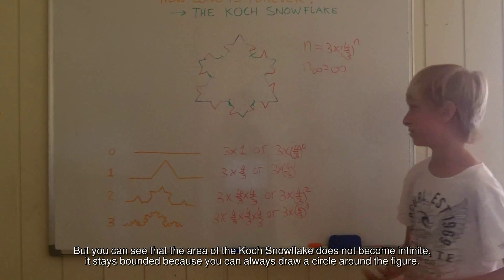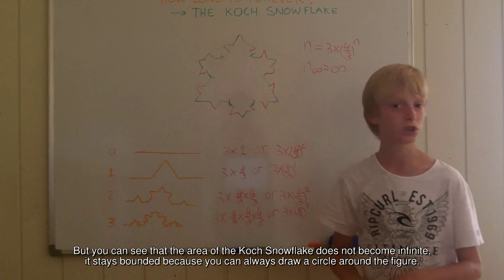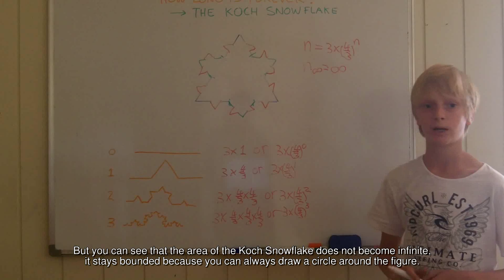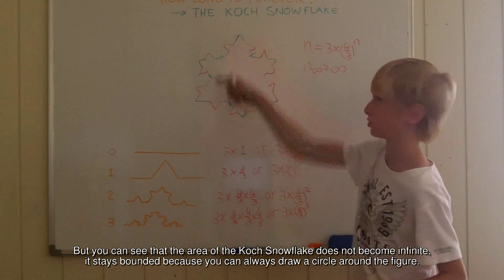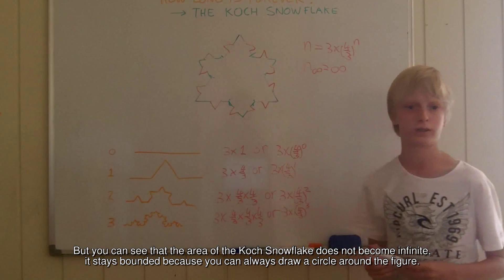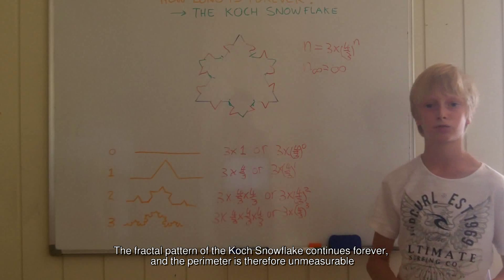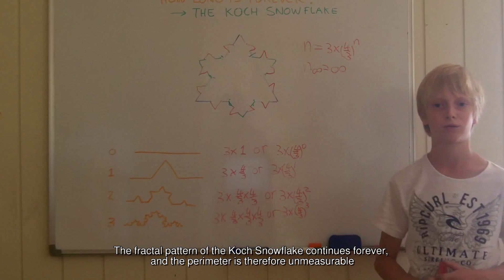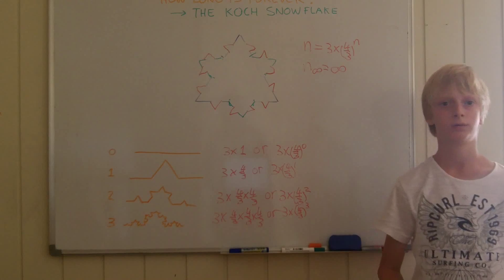But you can see that the area of the Koch snowflake does not become infinite. It stays bounded, because you can always draw a circle around the figure. The fractal pattern of the Koch snowflake continues forever, and the perimeter is therefore unmeasurable.